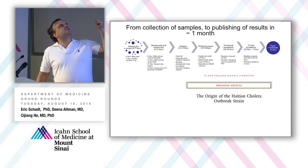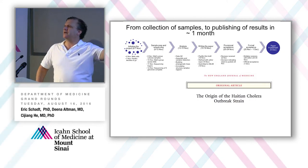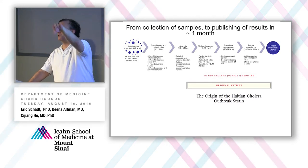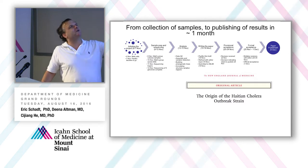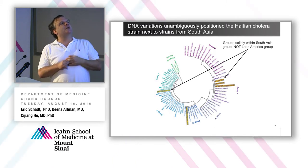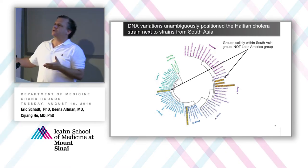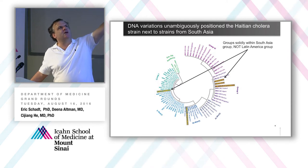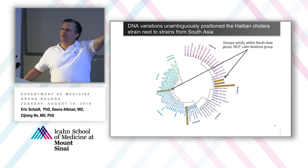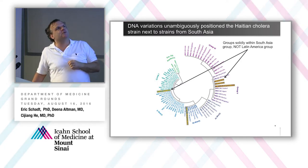From the collection of the samples in Haiti to a report in the New England Journal was 30 days — collect samples, sequence, analyze, write the paper, go through review, and publish. Our results showed that the cholera outbreak in Haiti derived from South Asia, making the most likely cause UN troops from South Asia coming into Haiti. It was completely unrelated to Latin American strains, which disproved the theory that it derived naturally from Haitian waters. We were the group that resolved the origins of that outbreak.